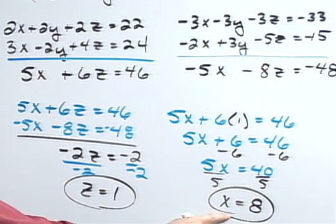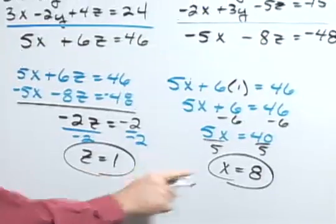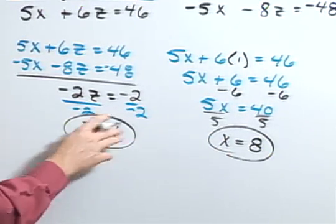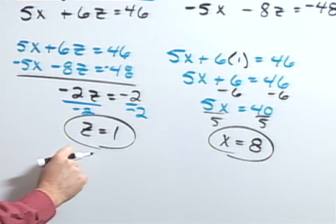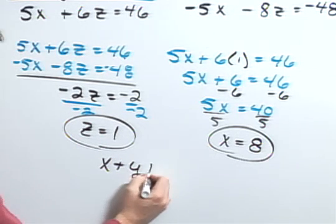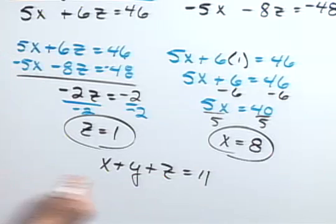Well now I have my x equals 8 and my z equals 1, two of the three variables. Now I can substitute both of these values into one of my original equations. In this case, I'm going to use my very first one, which was x plus y plus z equals 11.